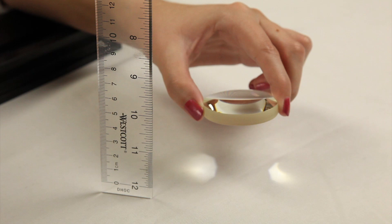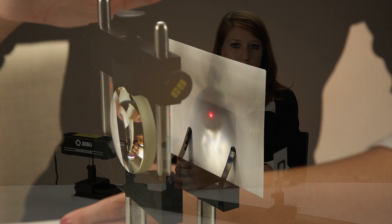Another way to measure this in a lab setup is to use a collimated light source like this laser. The distance between the lens and the focus spot is equal to the focal length.